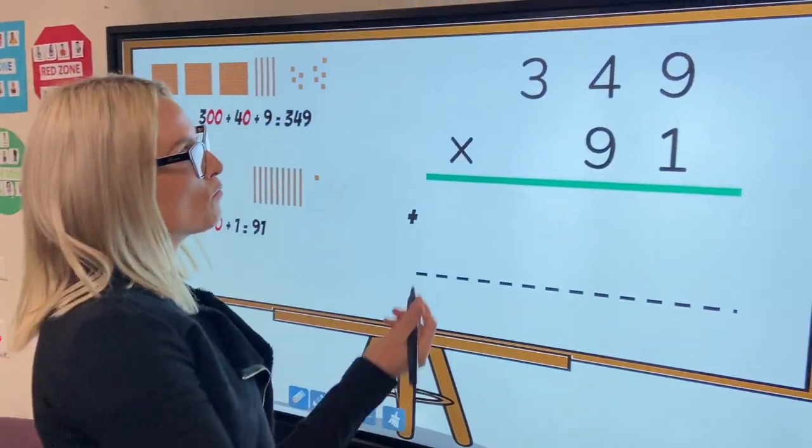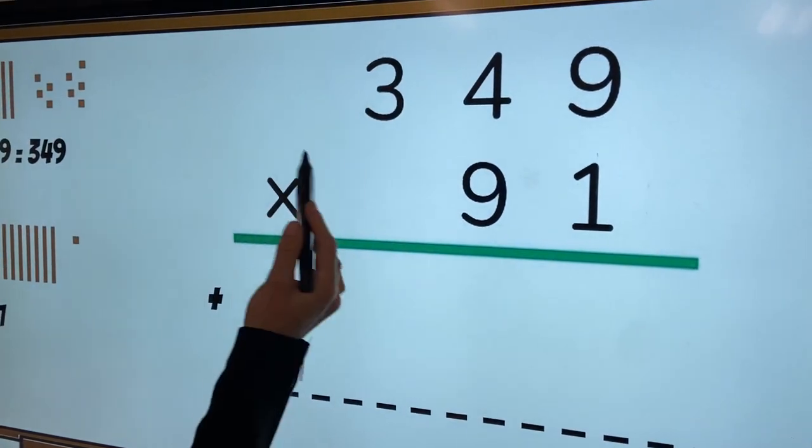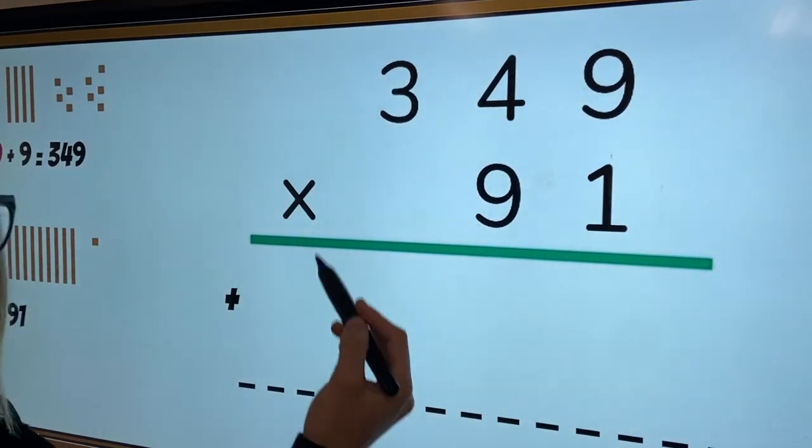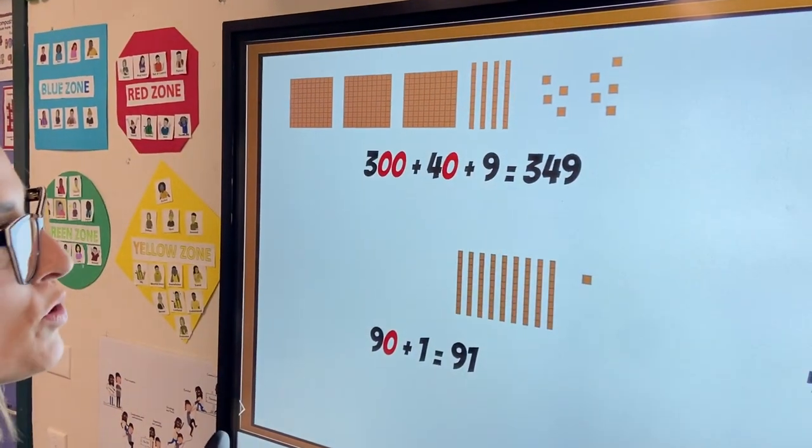So here when we look at what this number is asking us to do, it's asking us to multiply 349, 91 times. So what we can do is actually look at what do these numbers represent?